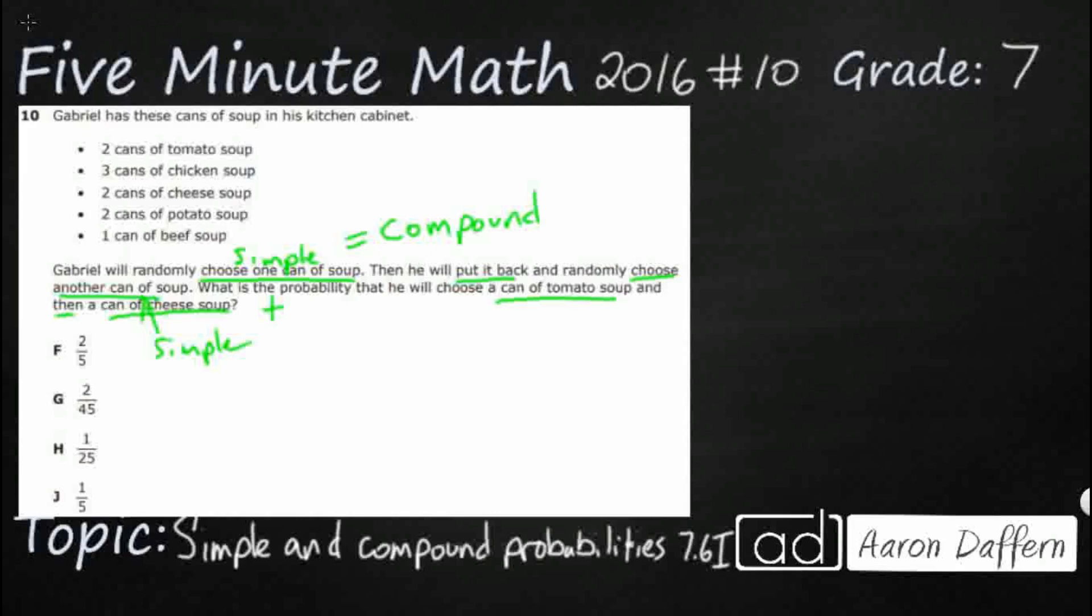So if I were just to draw a picture here, I'm just going to put my tomatoes. Chicken, I'm going to put CK, CK, and then CK. I've got two cans of cheese. Put CS for those. And then two cans of potato. That's a P. That's a P. And then one can of beef is a B. So obviously it looks very simple here. I've got an array, a two by five array. So I've got 10 cans. And that's where it's going to become very important that after we randomly choose a can, we're going to put it back. So our denominator or our total does not change.